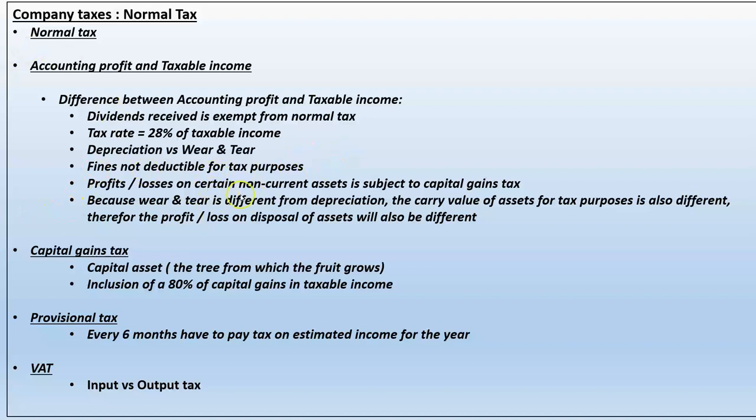Profits and losses on certain non-current assets are subject to capital gains tax. Because our wear and tear allowance differs from our depreciation charge, a non-current asset will have a different value for tax purposes than for accounting purposes. This will create something you will come across next year called deferred tax. Just note that as a result of depreciation and wear and tear being different, the carrying value of assets for accounting purposes and for tax purposes will also be different.